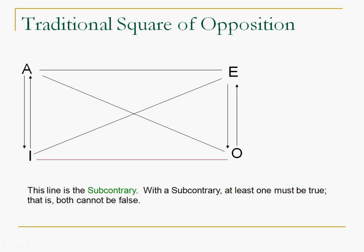If O is false, I has to be true. All right? So, they can both be true, but they cannot both be false. All right? So, again, if I is true, O can be either true or false. We just don't know.